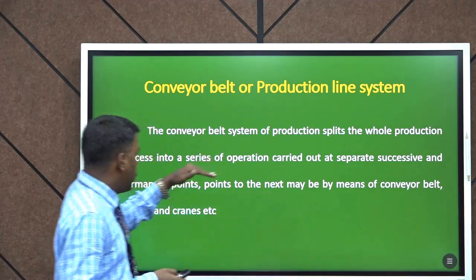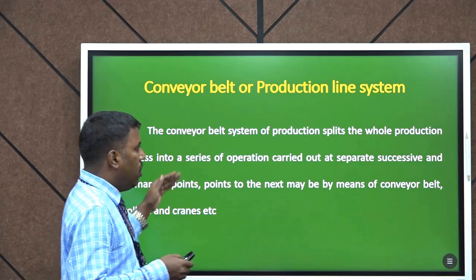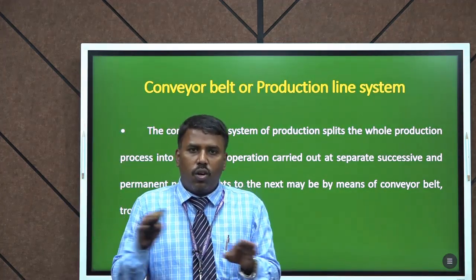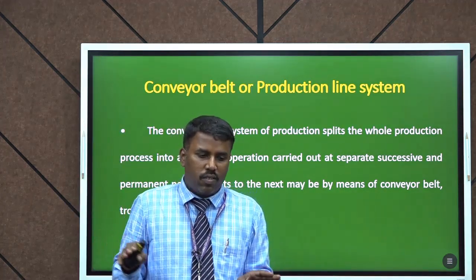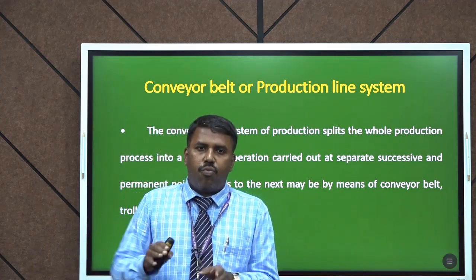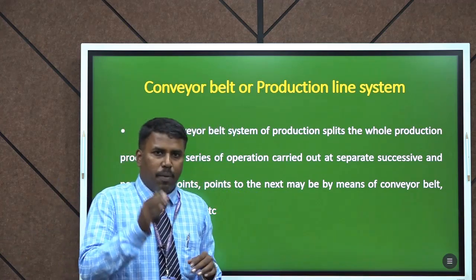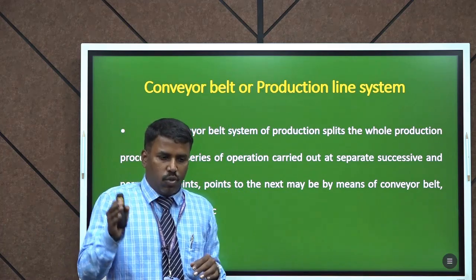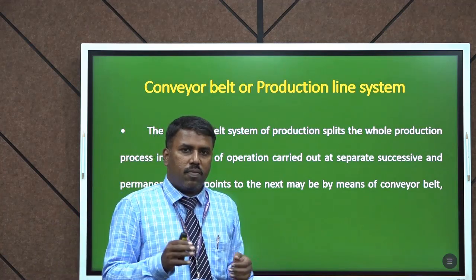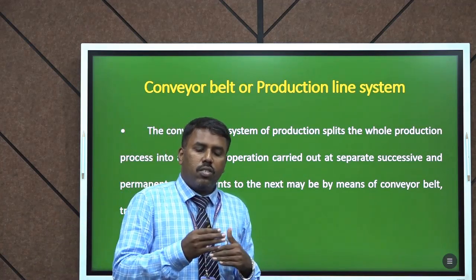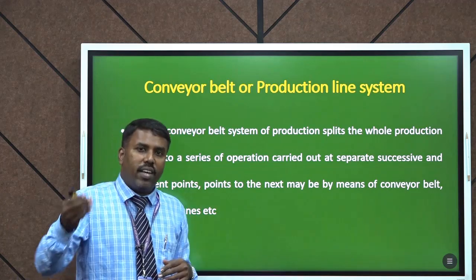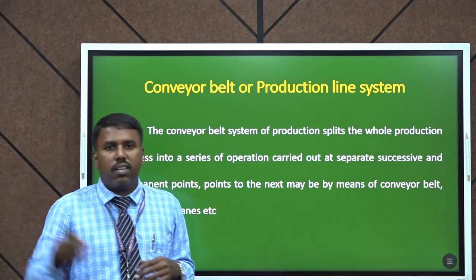The second one is the conveyor belt system or production line system. In this system, production splits the whole process into a series of operations carried out at separate, successive, and permanent points, moving from one point to the next by means of a conveyor, crane, etc.